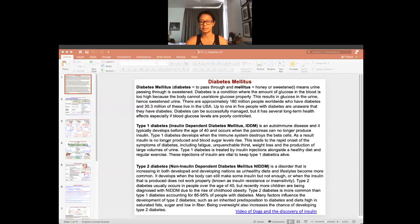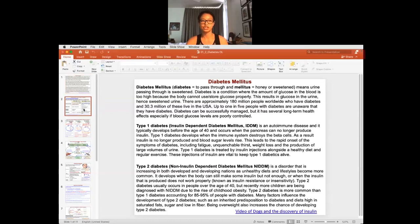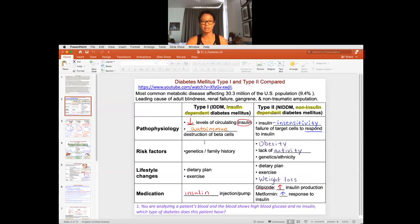The two are distinguished by what happens in the disease and the cause. Let's take a look at this comparison chart. I like to compare them side-by-side, and there are also some videos you can watch. The most common, type 2, is called non-insulin-dependent diabetes mellitus. Type 1 is insulin-dependent diabetes mellitus.